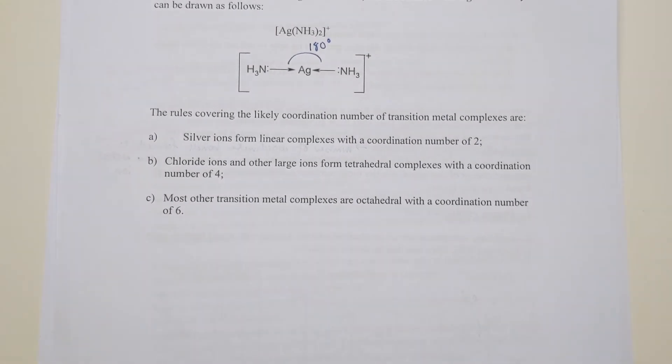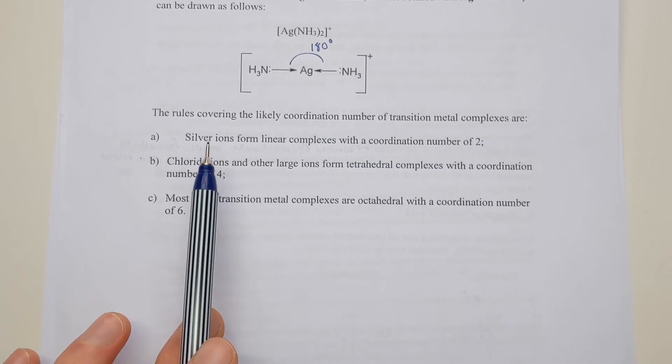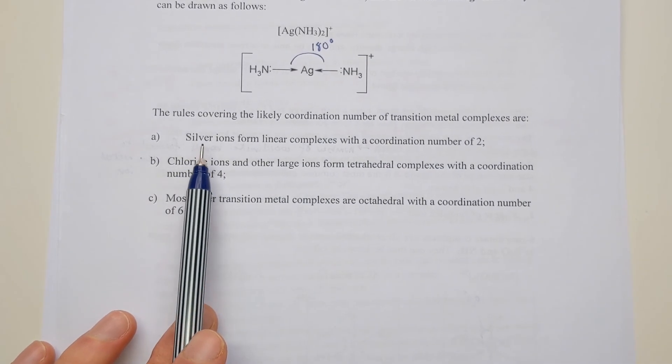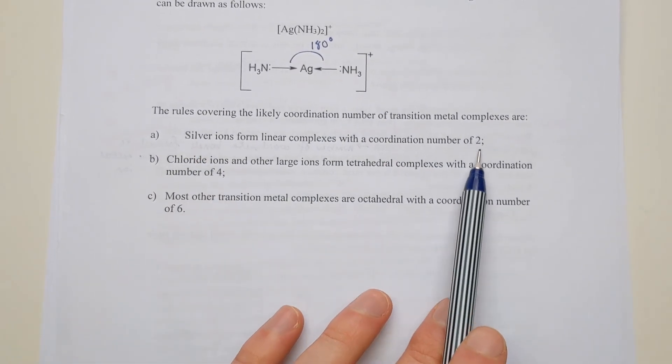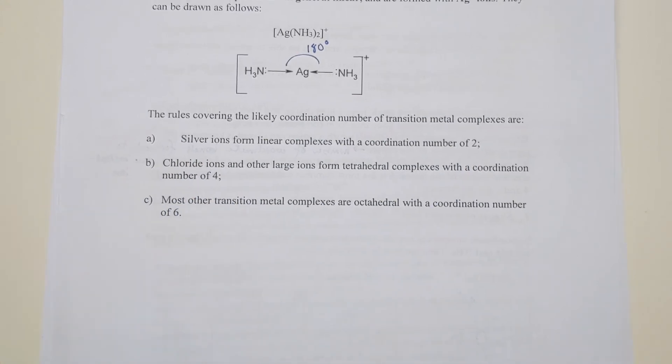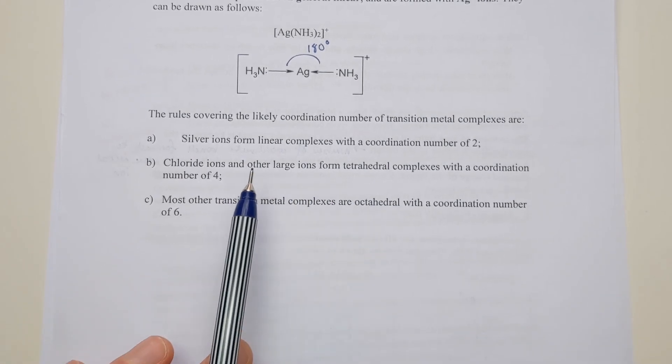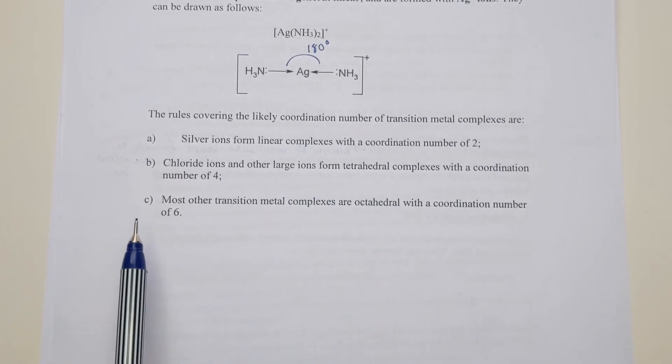We've got some rules down the bottom here, which aren't really rules, more guidelines to be honest, but they go over the key trends. Silver is the only one that forms linear complexes with a coordination number of two. Chlorides and other large ions, like thiocyanate ions, will generally only form complexes with a coordination number of four. However, most other transition metal complexes, for most orientations you'll find, will have an octahedral configuration with a coordination number of six.